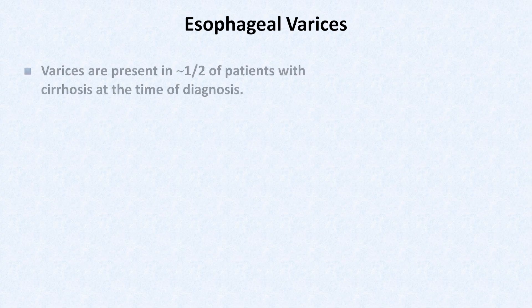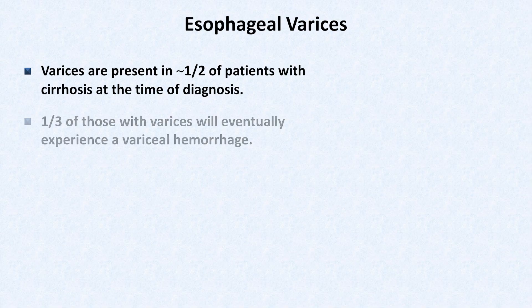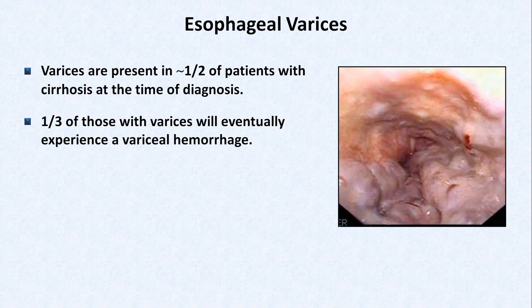Focusing just on esophageal varices, about one-half of patients will have them at the time their cirrhosis is diagnosed, and one-third of those who develop varices will eventually experience a variceal hemorrhage. Here's what they look like on endoscopy. This is in the esophagus, and those bumpy, purplish things spanning from 2 o'clock to 8 o'clock — those are the varices.